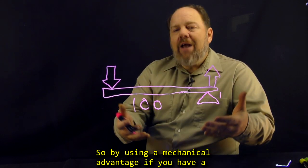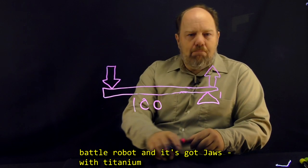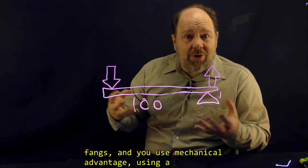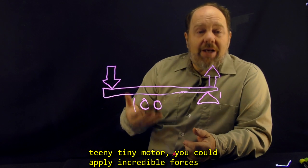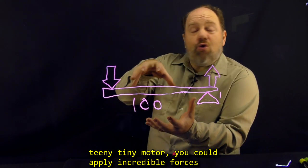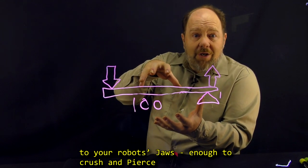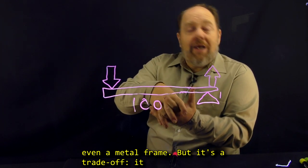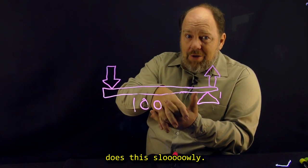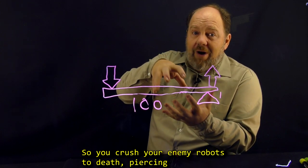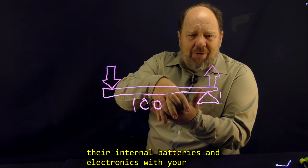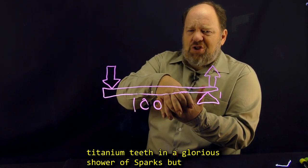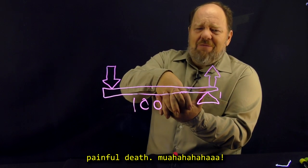So, by using mechanical advantage, if you have a battle robot and it's got jaws with titanium fangs, and use mechanical advantage, using a teeny tiny motor, you could apply incredible force to your robot's jaws. Enough to crush and pierce even a metal frame, but it's a trade-off. It does this slowly. So you crush your enemy robots to death, piercing their internal batteries and electronics with your titanium teeth, in a glorious shower of sparks, but slowly. So it's a slow, painful death.